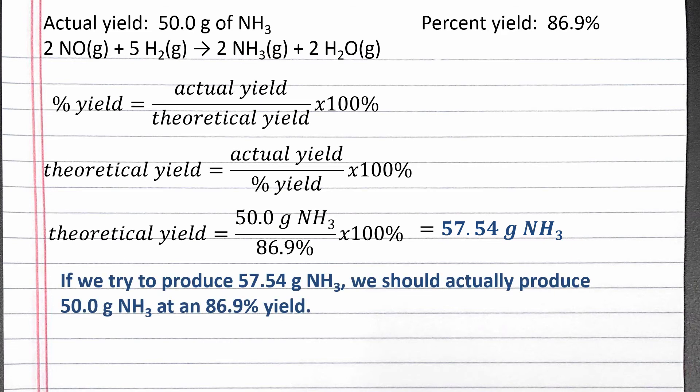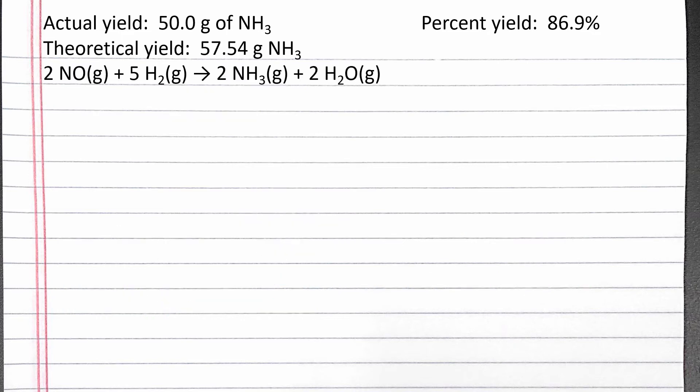So if we try to produce 57.54 grams of ammonia, we will actually produce 50 grams of ammonia at an 86.9% yield. Now we need to use dimensional analysis to determine how much hydrogen gas is needed to produce our theoretical yield of 57.54 grams of ammonia.